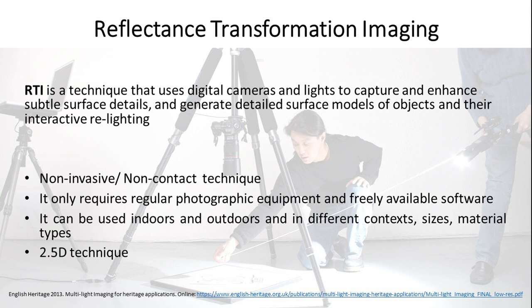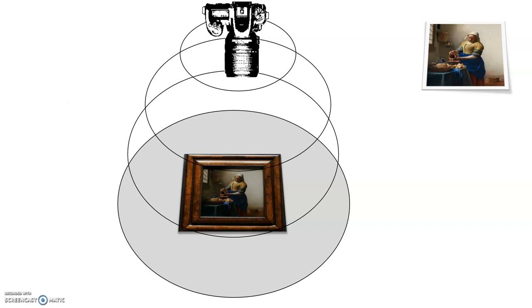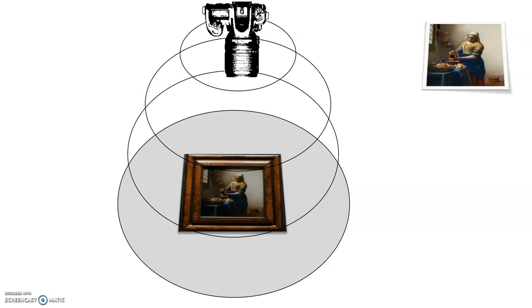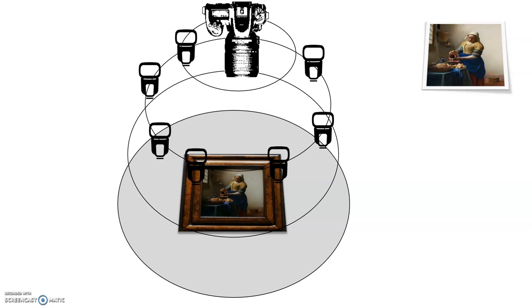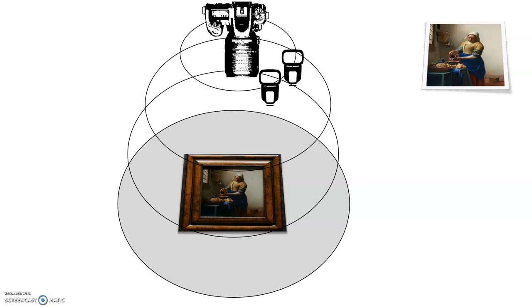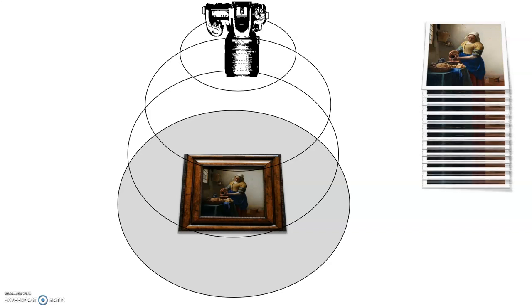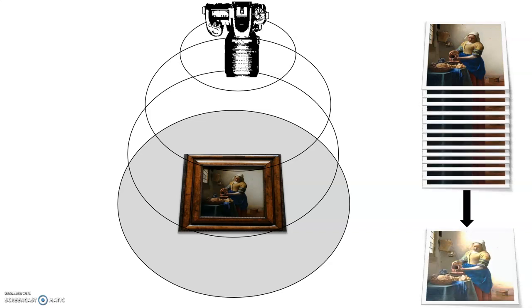Although RTI is not a 3D technique as it does not produce 3D models, the virtual relit object has an enhanced two-dimensionality due to the visual information provided by the effects of light and shadow. The way RTI works is rather simple: the object and camera are at fixed positions, so the only thing that changes between photographs is the position of light. After capturing all the images needed, the software produces one composite image in which light can be interactively manipulated to reveal surface details.